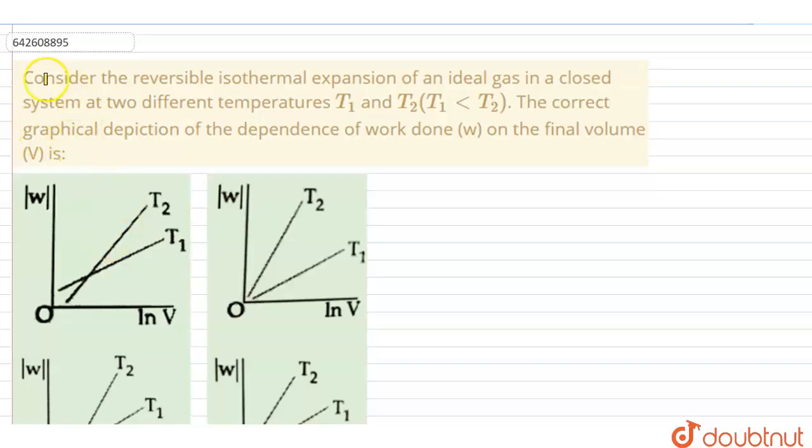Hello students, let's start the question. Consider the reversible isothermal expansion of an ideal gas in a closed system at two different temperatures, T1 and T2. It has been given that T1 is less than T2. The correct graphical depiction of the dependence of work done W on the final volume V is.